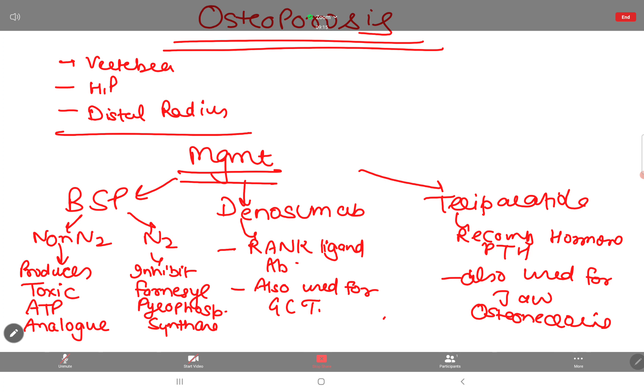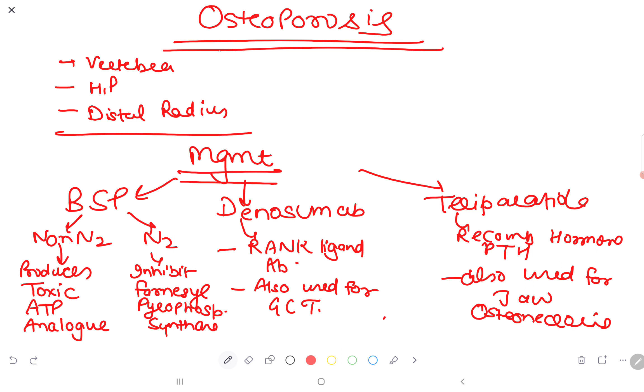In osteoporosis, fractures most commonly occur in the vertebra, then hip, then distal radius. Maximum chances of fractures are in the vertebra, then hip, then distal radius.